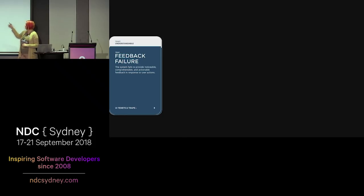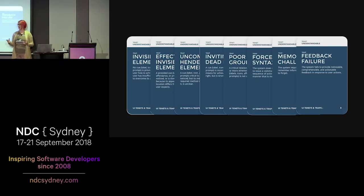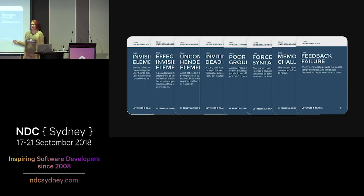There are a total of nine Tenets — nine good things we strive for. All of the Tenets have at least one Trap, and some have even more. For instance, 'understandable' has eight different Traps — eight things that will degrade understandable, eight things that will make your user experience less understandable, basically eight things you should avoid.